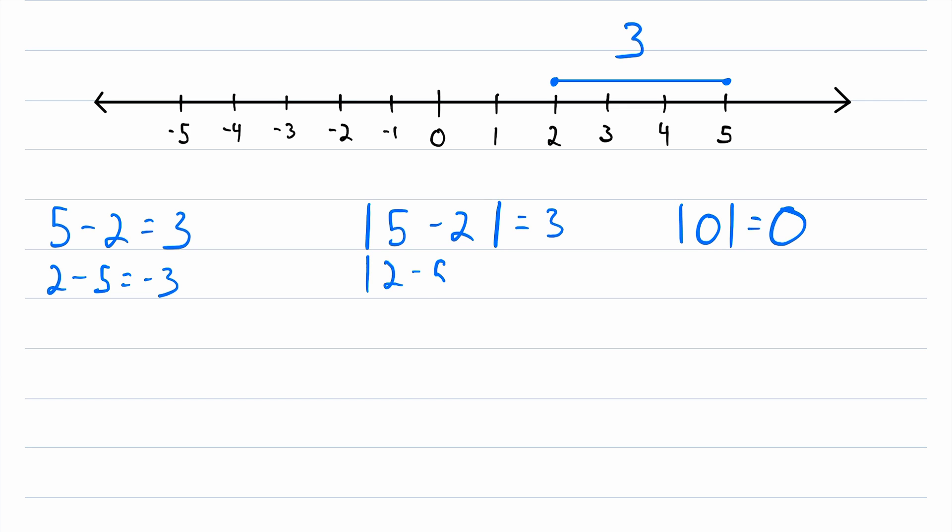However, if the quantity in the absolute value bars is negative, the absolute value bars turn it into a positive. So the absolute value of 2 minus 5 is equal to positive 3, not negative 3. So this is the key. The absolute value bars solve our problem.